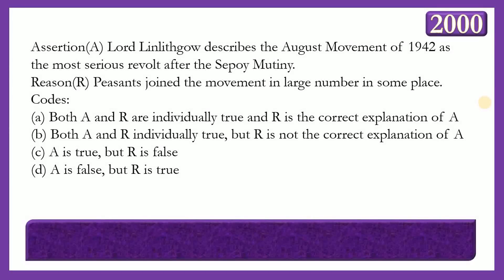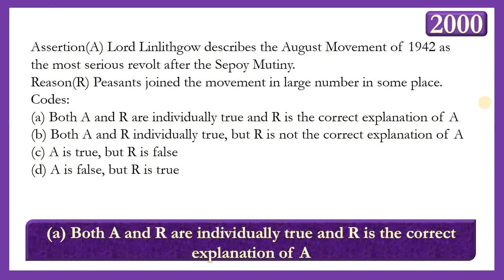Next assertion-reason question. Assertion: Lord Linlithgow described the August Movement of 1942 as the most serious revolt since the Sepoy Mutiny. Reason: Peasants joined the movement in large numbers in some places. The answer is option A — both A and R are individually true and R is the correct explanation of A — because the involvement of peasants made the Quit India Movement one of the biggest and most widespread movements, which led Linlithgow to call it the most serious revolt since the Sepoy Mutiny.